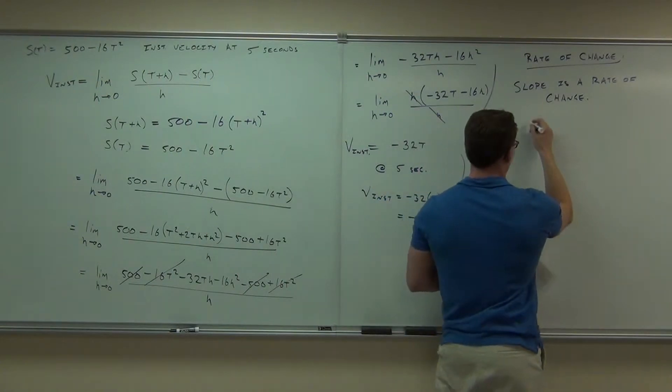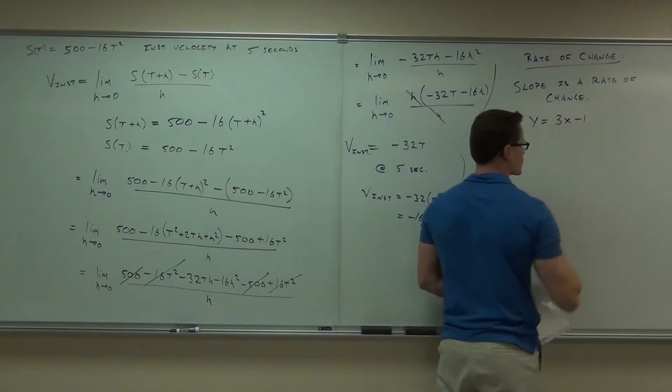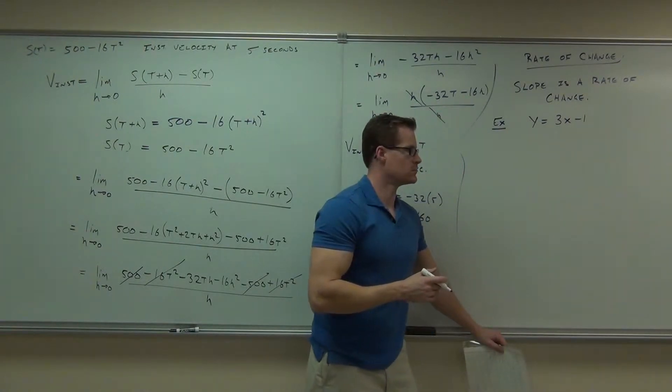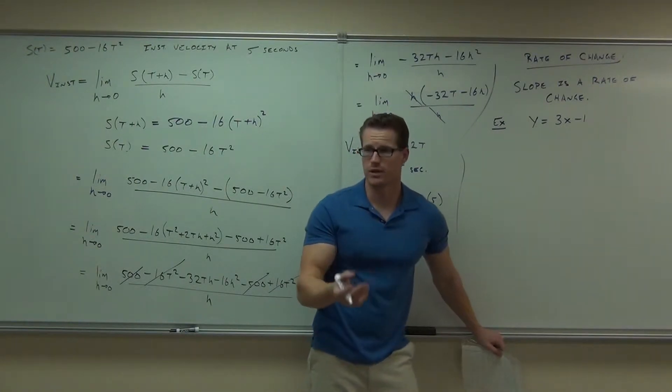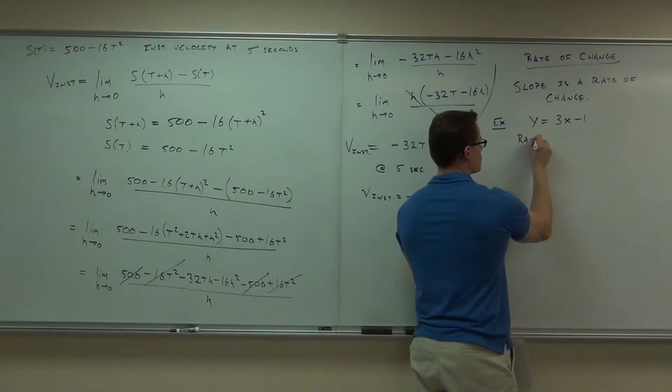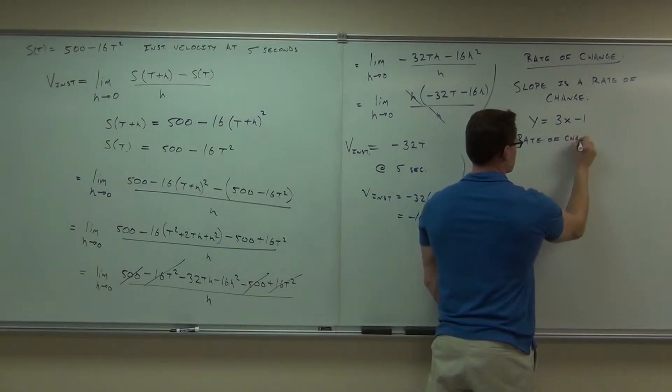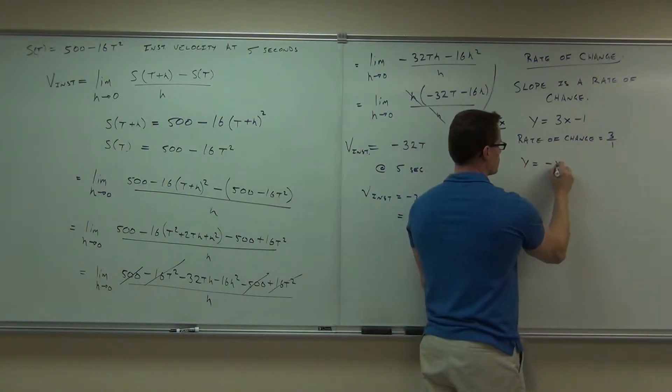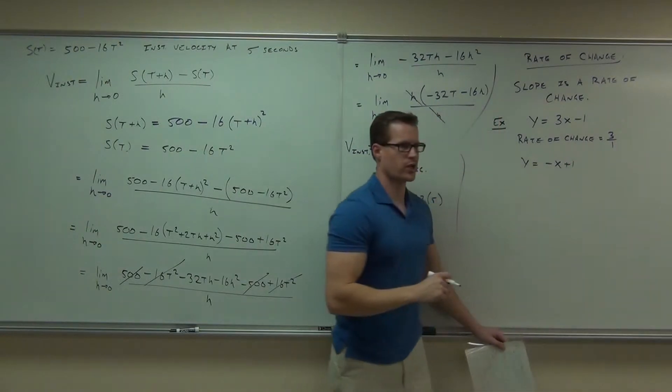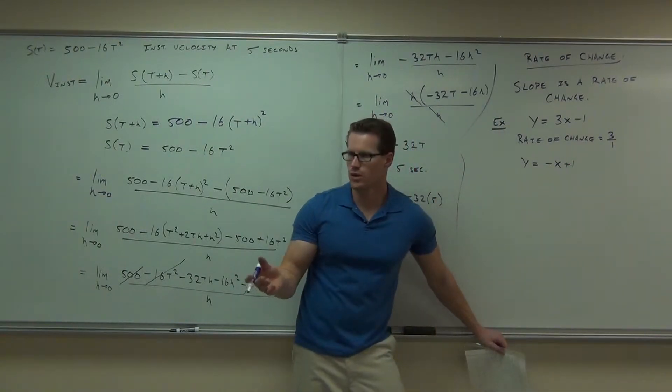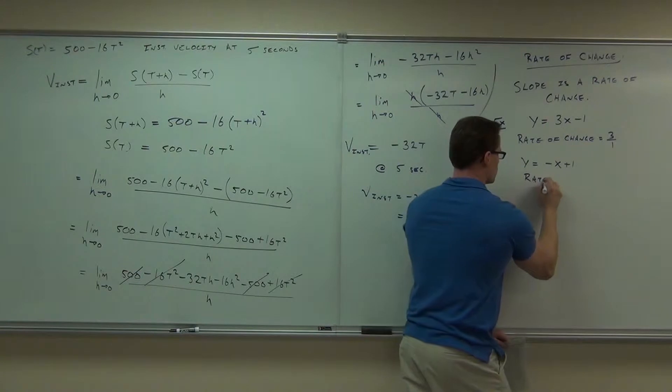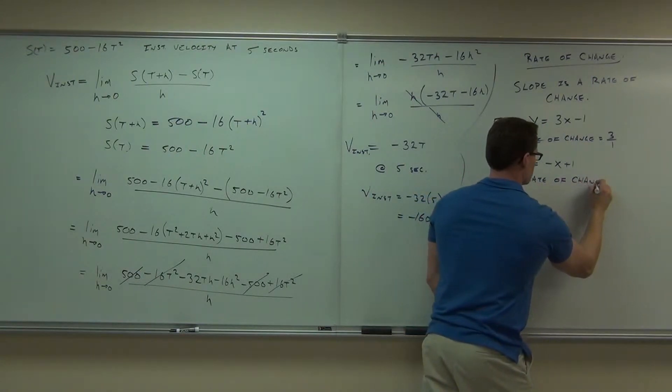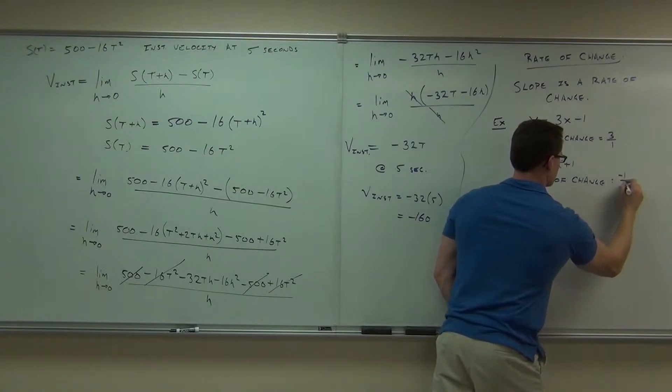So slope is a rate of change. Just a basic example here. What's the rate of change? 3 over 1. Why would you say 3 over 1? He's right. Why would you say 3 over 1? Slope is a rate of change. So the rate of change is 3 over 1. How about for this one? What's the rate of change there? Negative 1 over 1. Sure. Negative 1 over 1 if you want to say 1. Or just negative 1 would be the rate of change.